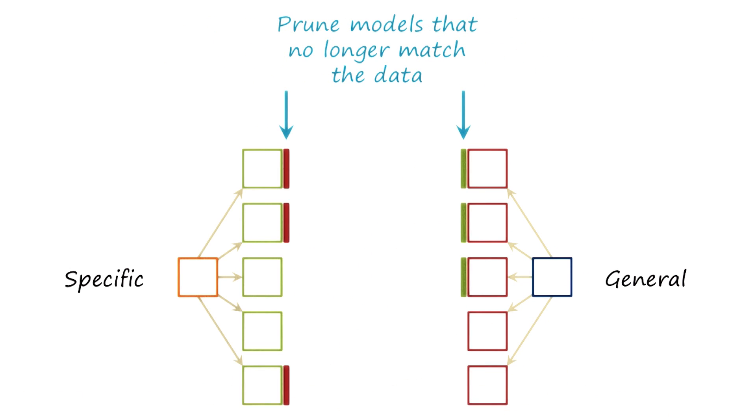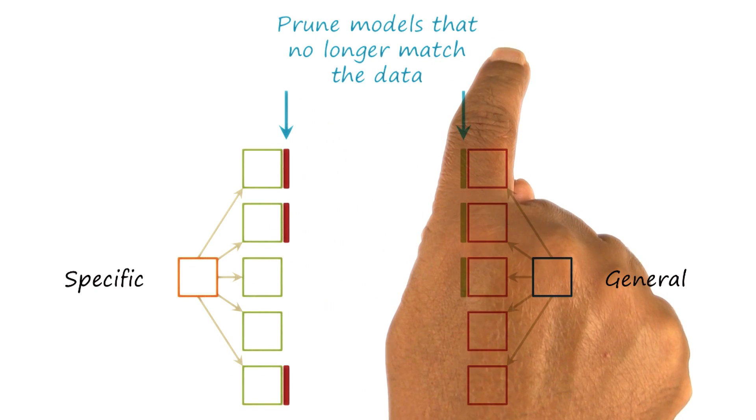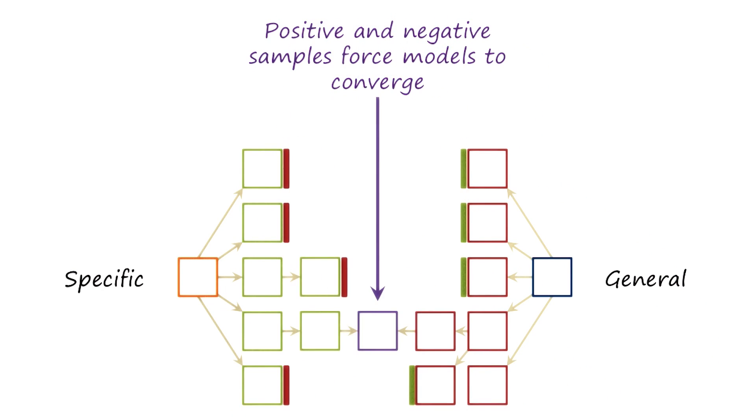As we'll illustrate in a minute, we start with the most general model and try to specialize it. Some of these generalizations and specializations that we are creating will no longer match the current data. When that happens, we'll prune them out. As we prune on this side, as well on this side, the two pathways may merge, depending on the ordering of the example.